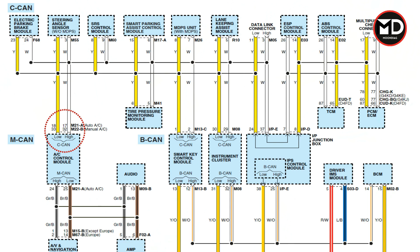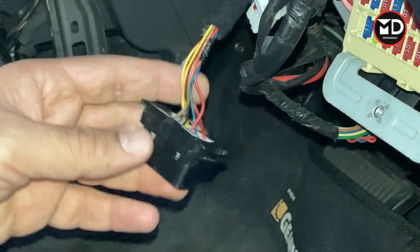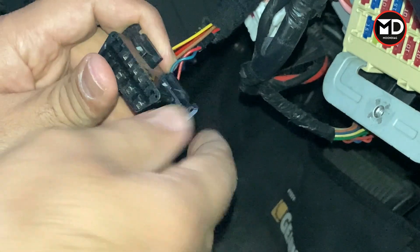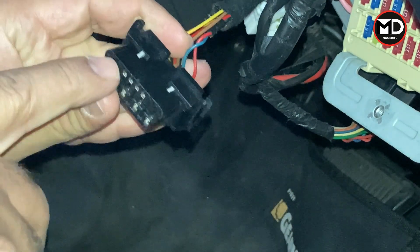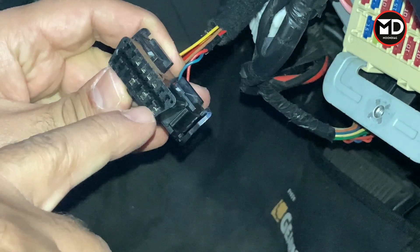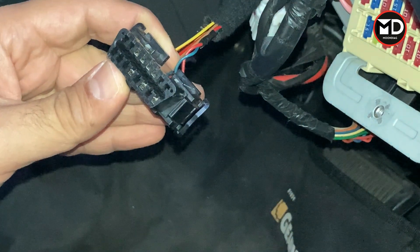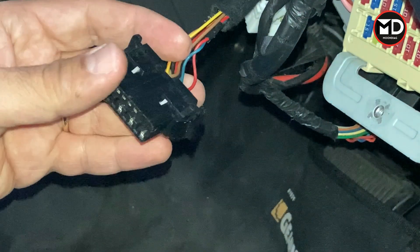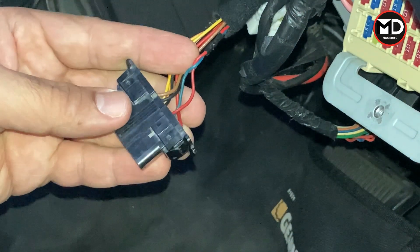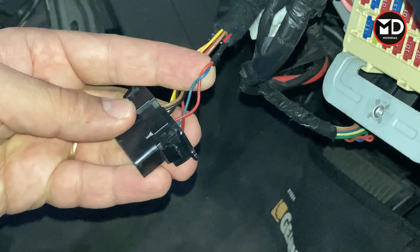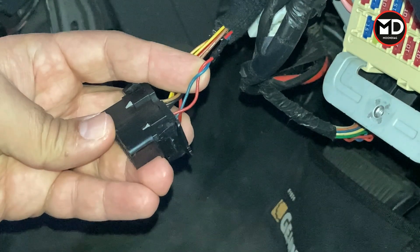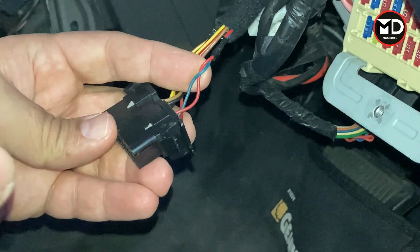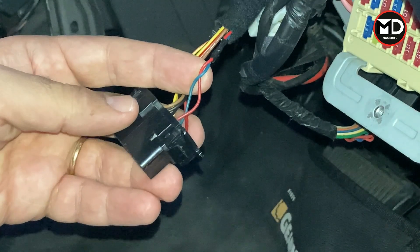Right now here on the OBD2 connector, two pins out of these 16 pins are for the CAN bus. Generally, pin number 6 and pin number 14 on the OBD2 connector are for the CAN bus. So when you connect your scan tool, your scan tool is going to be part of the CAN bus as well, to get information from those control units which are communicating via the CAN bus.